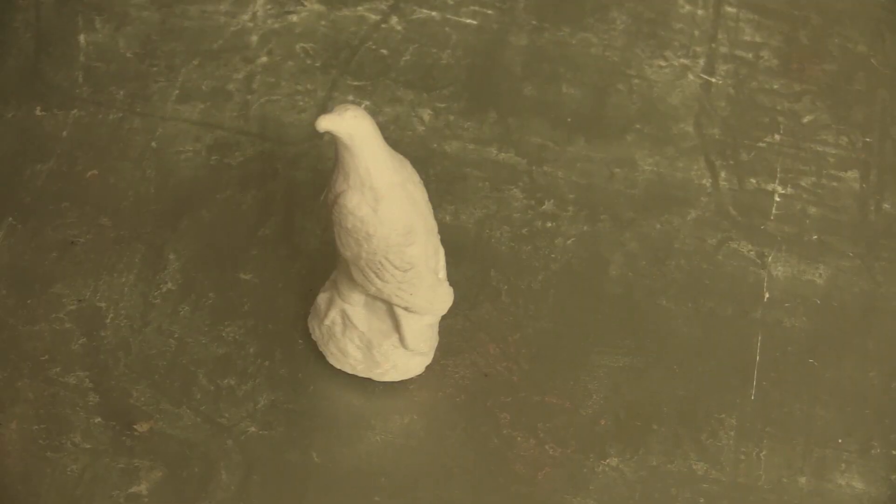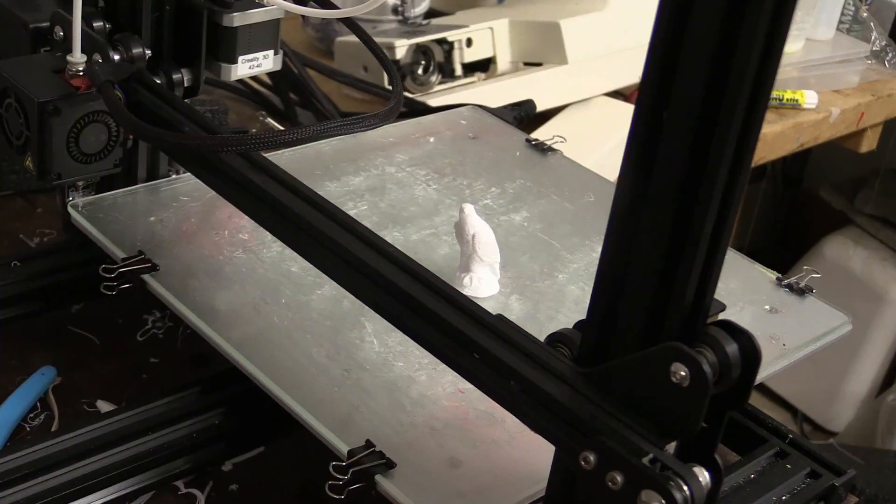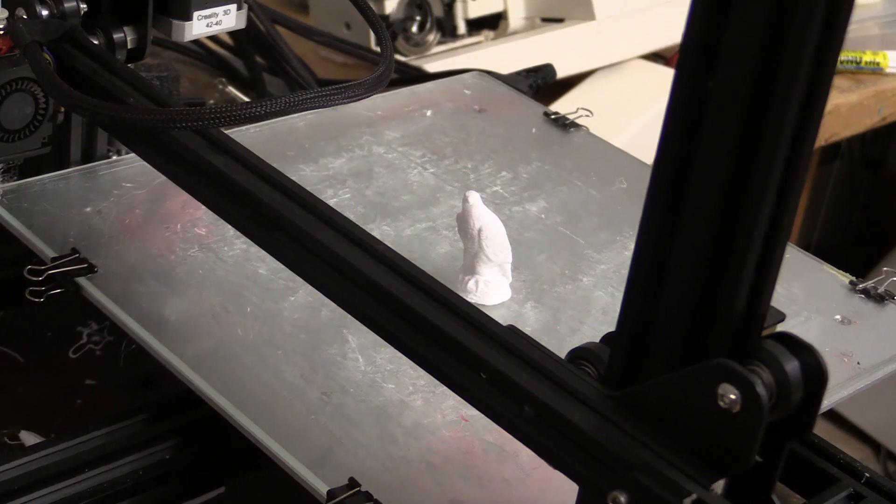The equipment that you will need includes your original shape. We are using a 3D printed eagle but you can make your original or master object from other materials including plastic, wood, clay or polymer clay.